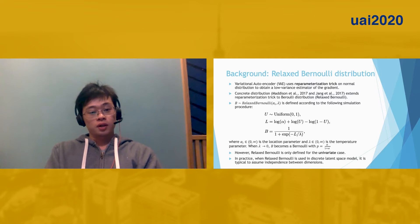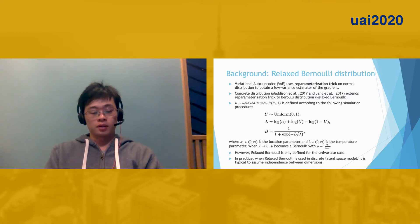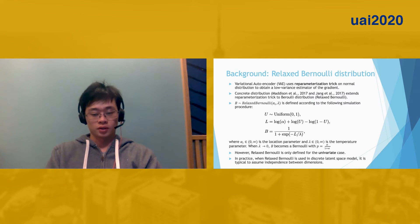Let's first take a look at some background knowledge. In Variational Autoencoder, people use the reparameterization trick to obtain a low-variance gradient estimator of the objective. And the concrete distribution proposed by Chris Maddison and Eric Jang extends this trick from continuous distributions to discrete distributions.